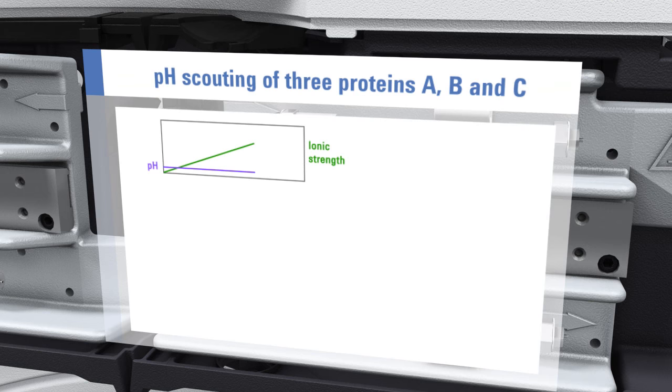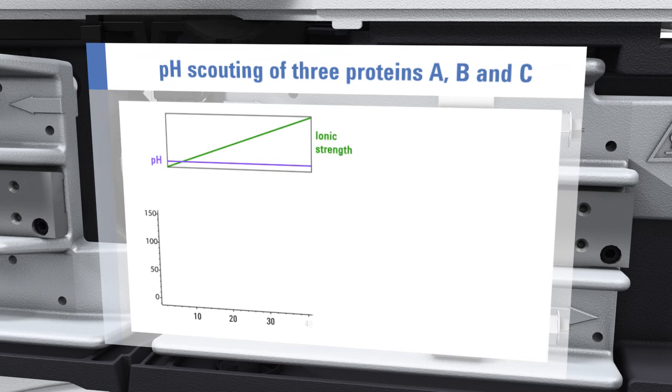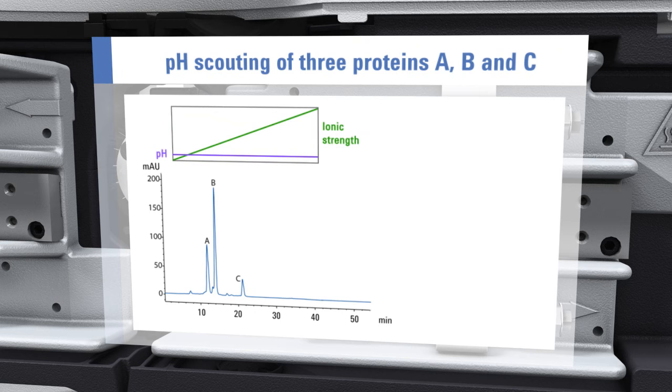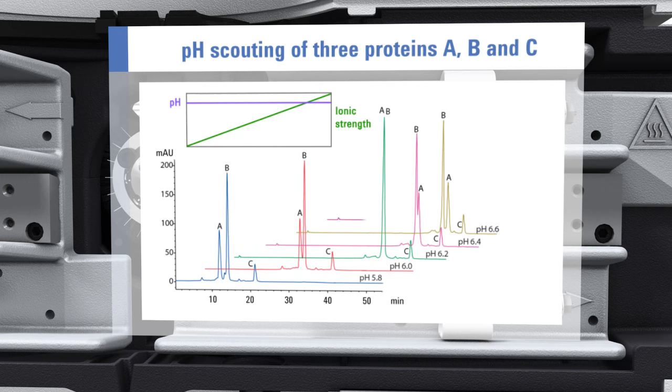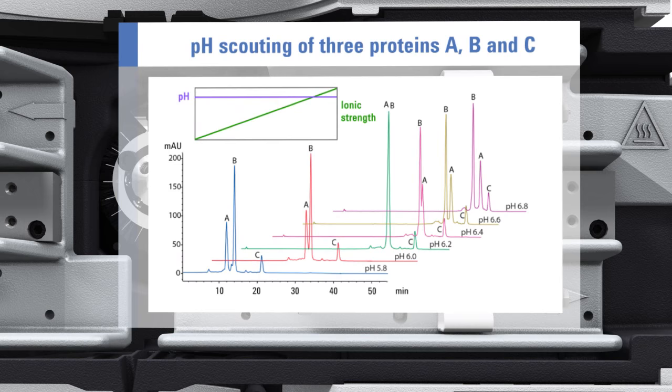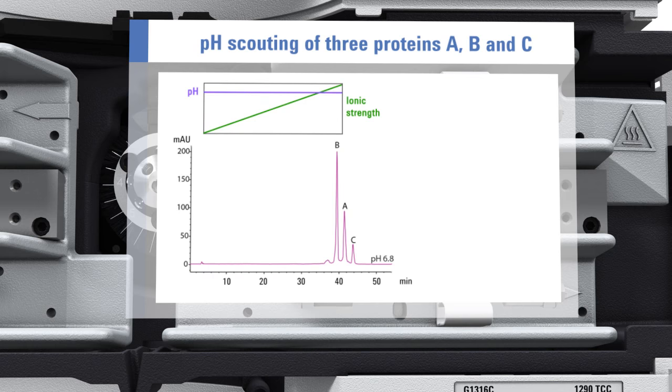In the following example of pH scouting, salt gradients at different pH values are used to optimize the separation of three proteins. Using the Agilent 1260 Infinity Bioinert LC, salt gradients are created at pH values from 5.8 to 6.8 in steps of 0.2, giving a total of six different chromatographic methods. Even small differences in pH lead to significant changes in separation performance. The salt gradient at pH 6.8 yields the best separation.